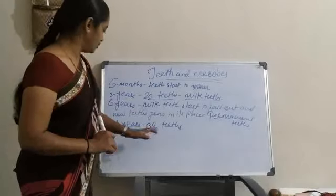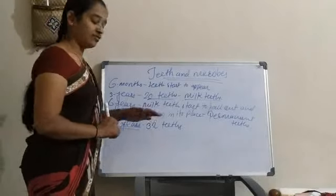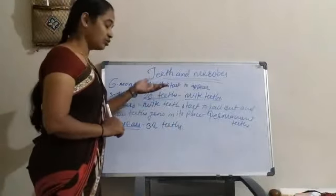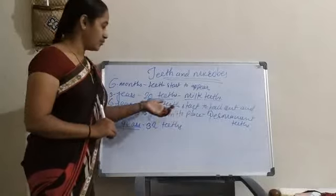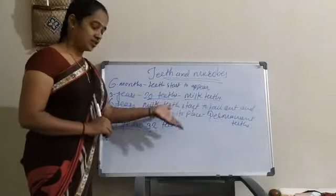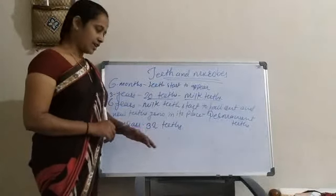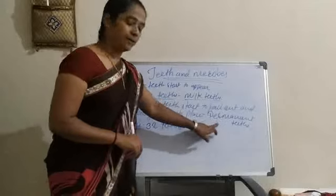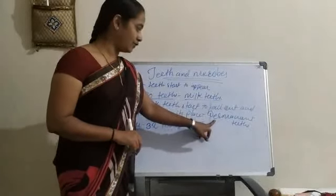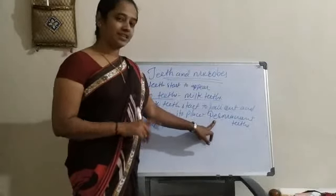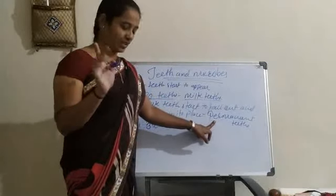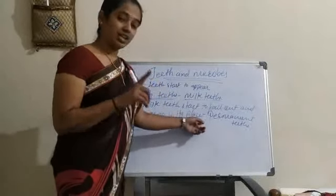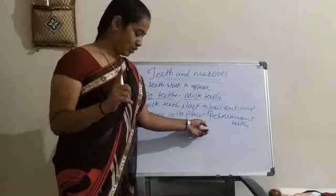So this is about teeth — when the teeth start to grow, how teeth grow, when teeth fall down, and when new teeth grow. Only permanent teeth grow in our mouth, and after permanent teeth fall, no new teeth can grow. So for that purpose, you should take care of your teeth very properly.